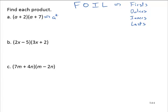The outers are the a and the 7. a times 7 is 7a. The inners are the 2 and the a. They have the product 2a.